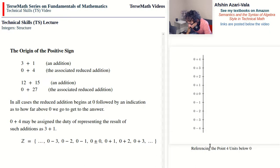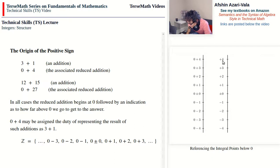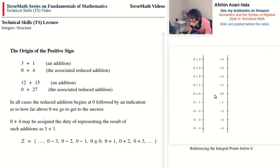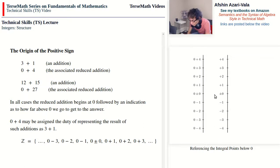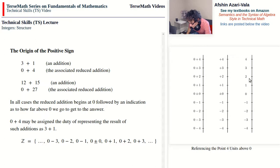The first simplification is to drop the 0, since it is always 0 and we can assume it is there. The next simplification is to drop the positive sign — we agree that if nothing is written it means positive. We also agree that the positive sign indicates you are above 0, and the negative sign means you are below 0. Because 0 is neither above nor below 0, it is neither positive nor negative, so for 0 we just write 0.